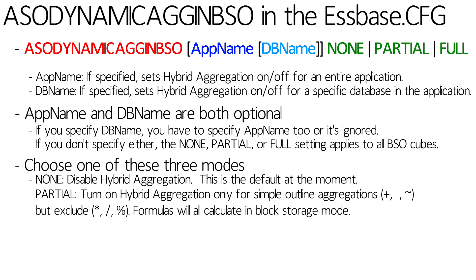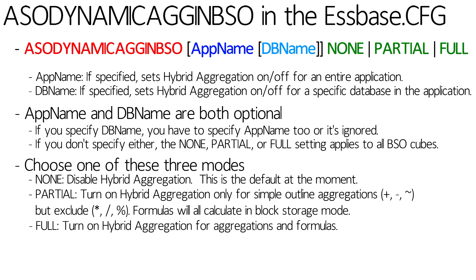The one we're most likely going to turn on is full, which turns on hybrid aggregation for all types of aggregation — plus, minus, tilde, times, divide, percent — and also any formula that the current version of hybrid aggregation supports.